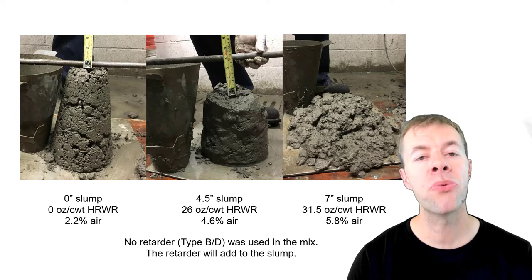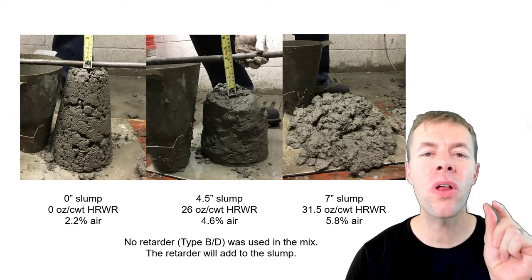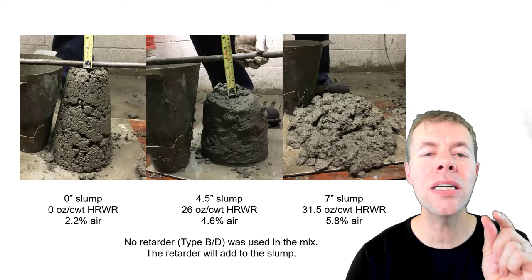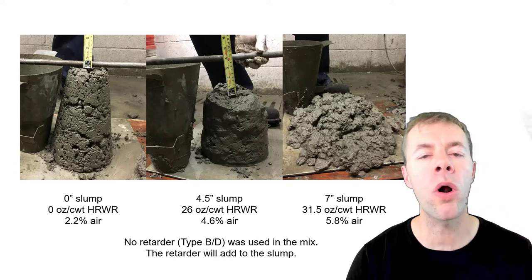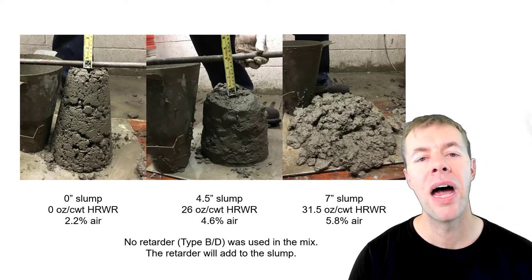But this is what we got in our lab. An equivalent amount of slump for a little bit more water reducer, but we saved 50 pounds of cement.